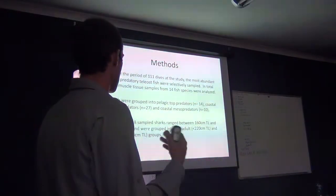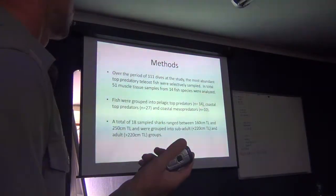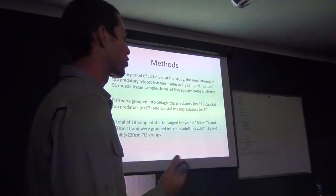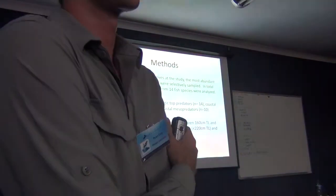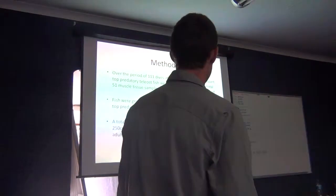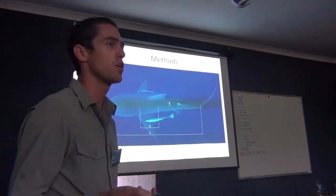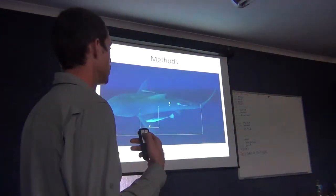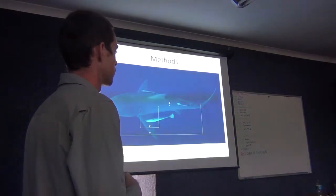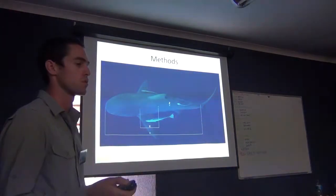Up to now we have processed 18 sampled sharks, ranging typically between 1.6 and 2.5 meters total length. We grouped those into two groups: one being a sub-adult component — those which are typically sexually immature. The initial component of the study involved collecting tissue samples via remote biopsy, a method used to minimize stress for these animals and collect a larger range of samples without having to catch them.